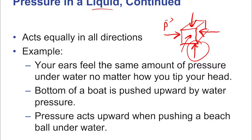You might wonder: if pressure pushes in all directions, why did the ball shoot up? That's because it doesn't push equally in all directions. The push from the bottom is greater than the push from the top, because the bottom is deeper and that difference matters. Only a cube that is infinitesimally small could actually have pressure equal on all sides.